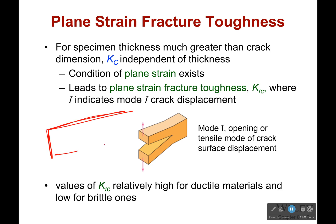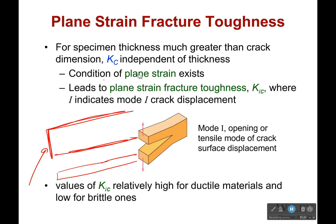One thing you might be thinking is: if I've got a really thick piece of metal versus a thinner piece of metal, obviously the thick piece of metal is going to be able to take a whole lot more. And I can understand why you would think that. If you're talking about a bowling ball hitting it or a meteor, you're right. But when it comes to fracture failure, you're wrong. For specimens where the thickness is much greater than the crack dimensions — and remember, these cracks are tiny — your fracture toughness is actually independent of thickness.